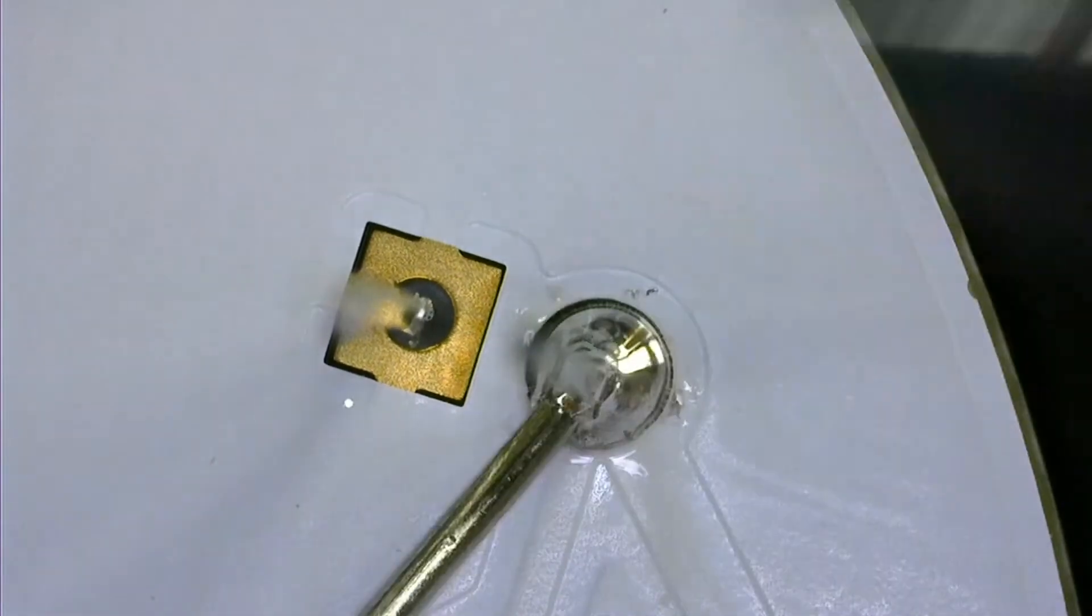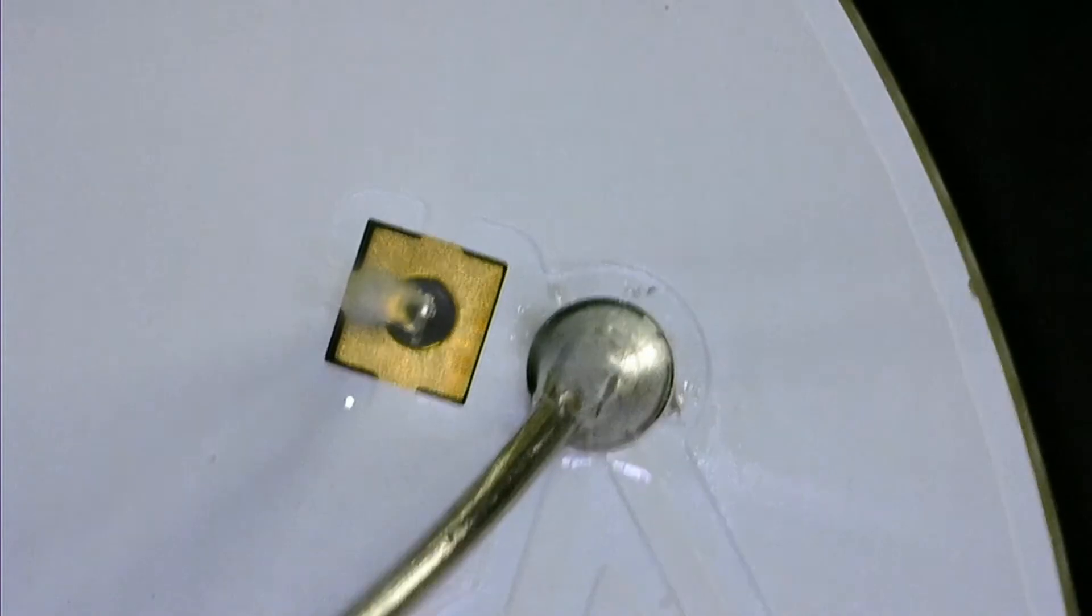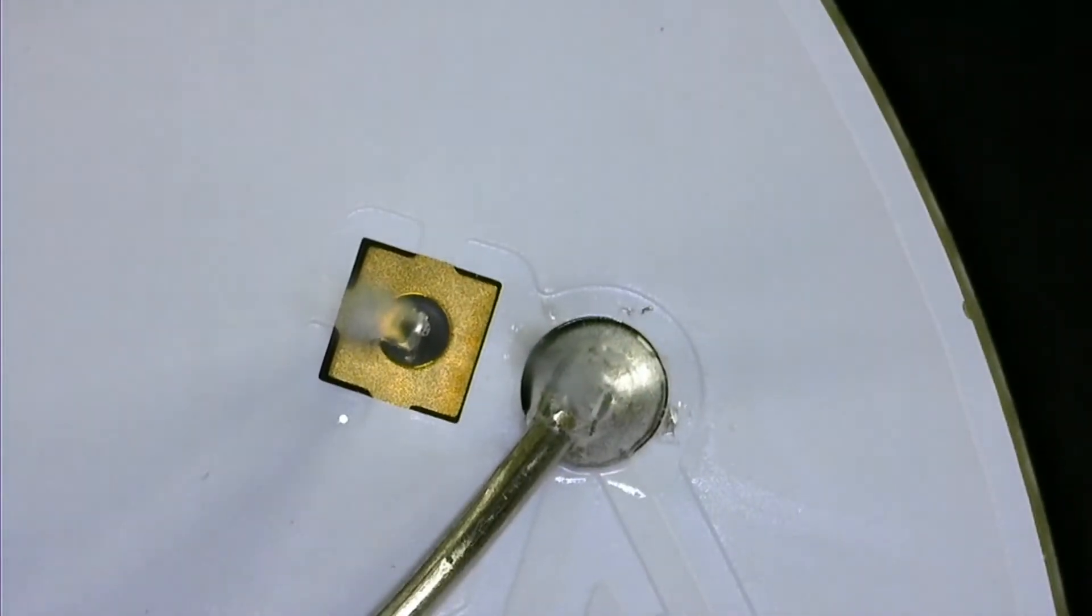If you accidentally remove the iron before the solder, the solder will stick to the joint. This is no big deal. Just use the iron to melt the solder and pull it away.